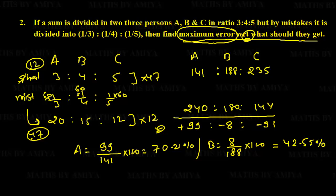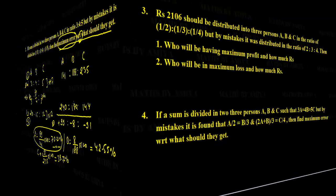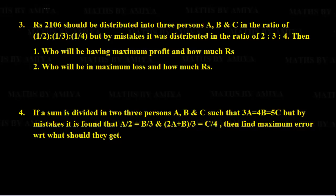Error percentage for A = 99/141 × 100 = 70.21%. Error percentage for B = 8/188 × 100 = 4.26% (loss). Error percentage for C = 91/235 × 100 = 38.72%. The maximum error is with A at 70.21%. The concept is: merge ratios by cross-multiplying summations, find profit/loss, then compute error as (difference/should value)×100. Pause the video and try the next two questions.